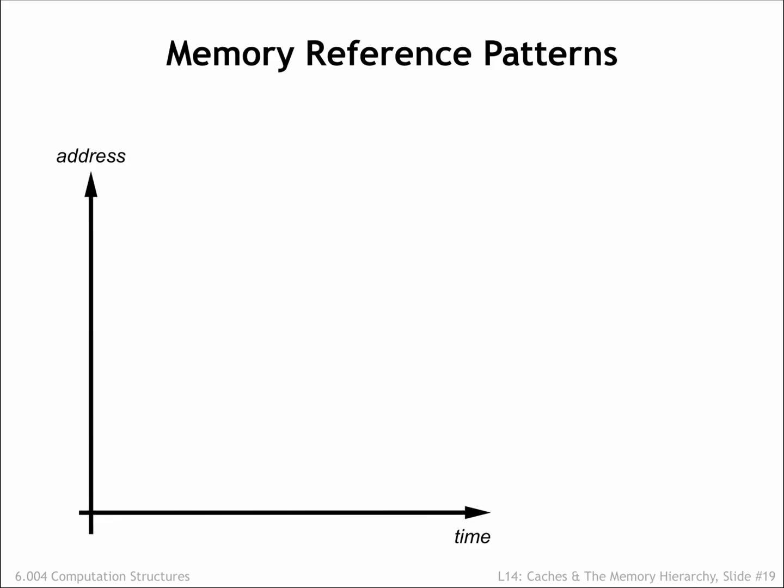To understand why programs exhibit locality of reference, let's look at how a running program accesses memory. Instruction fetches are quite predictable. Execution usually proceeds sequentially since most of the time the next instruction is fetched from the location after that of the current instruction. Code that loops will repeatedly fetch the same sequence of instructions, as shown here on the left of the timeline. There will of course be branches and subroutine calls that interrupt sequential execution, but then we're back to fetching instructions from consecutive locations. Some programming constructs, e.g. method dispatch in object-oriented languages, can produce scattered references to very short code sequences, as shown on the right of the timeline, but order is quickly restored.